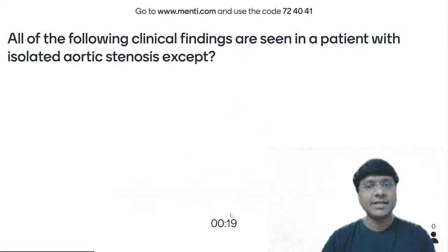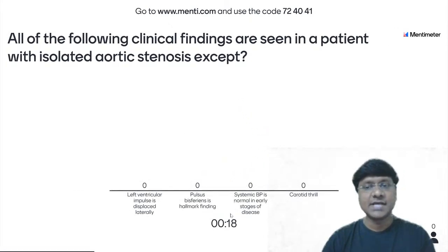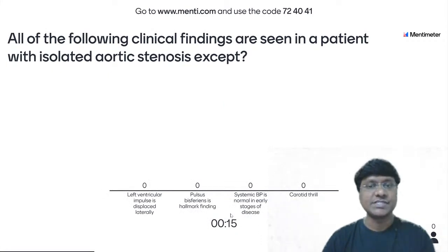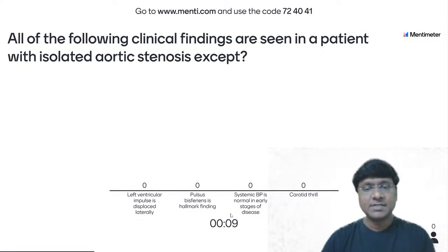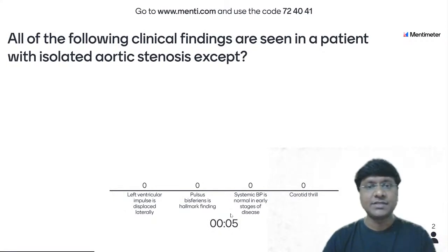All of the following clinical findings are seen in a patient with isolated aortic stenosis except: left ventricular impulse displaced laterally; pulses bisferiens is the hallmark finding; systolic blood pressure is normal in early stages of disease; carotid thrill. Which is the incorrect option?